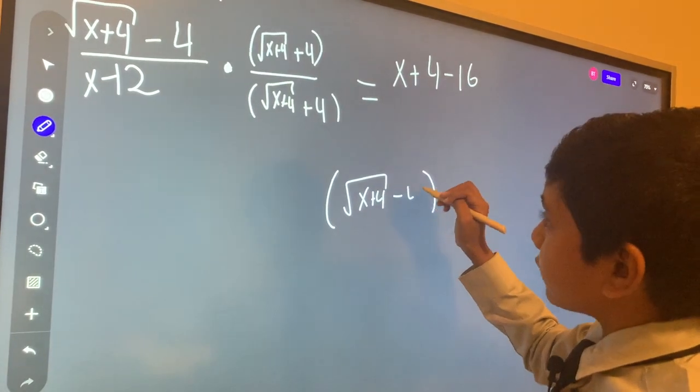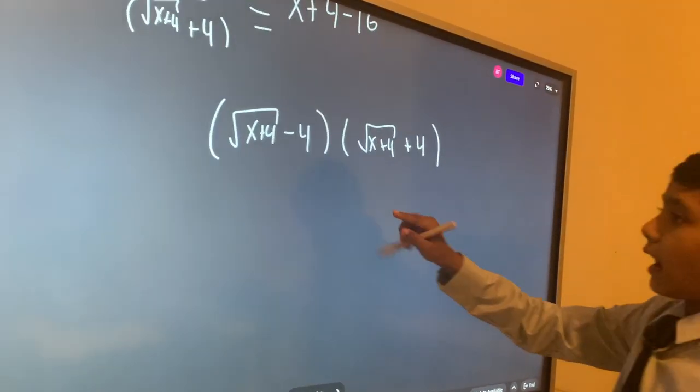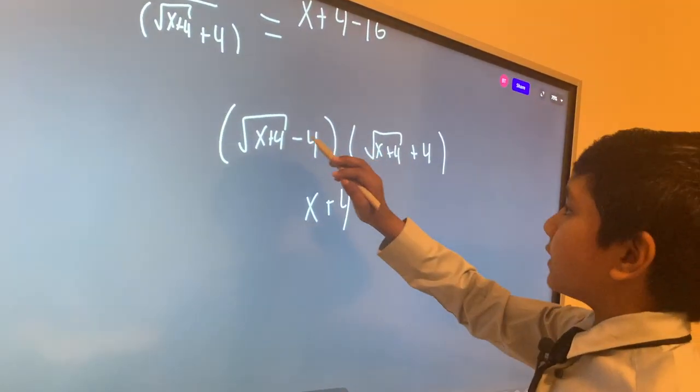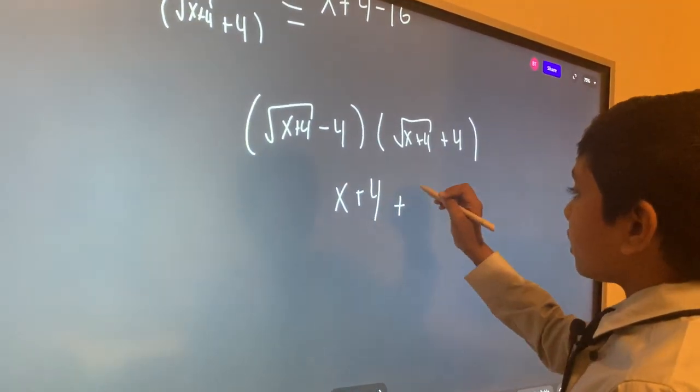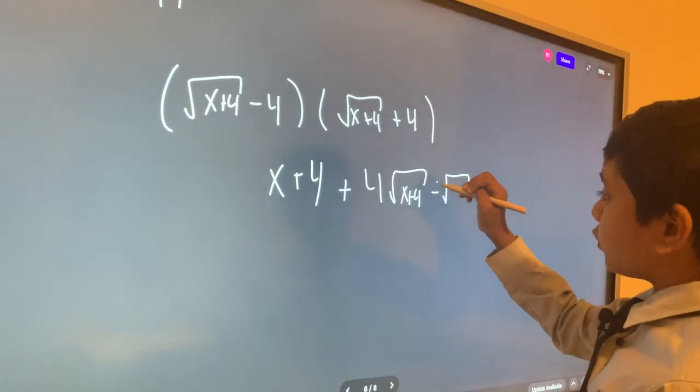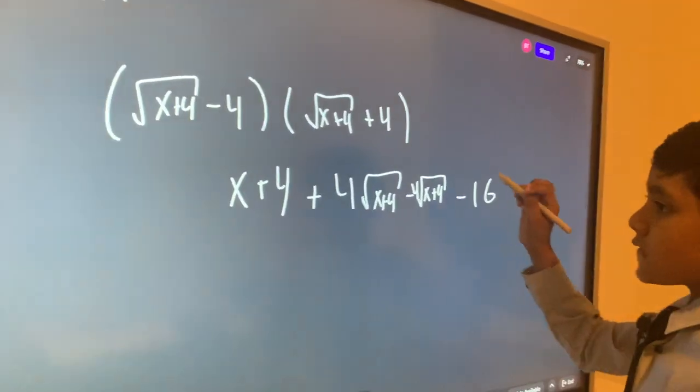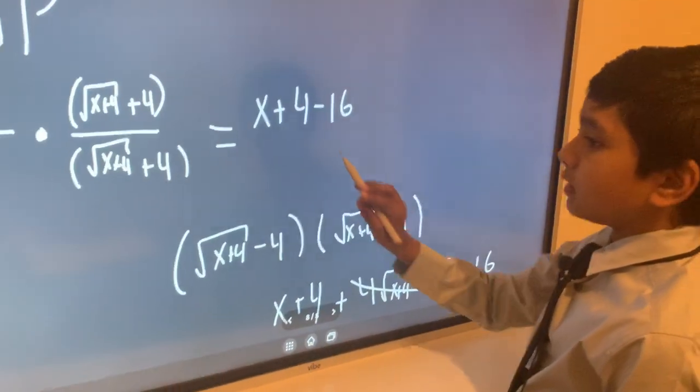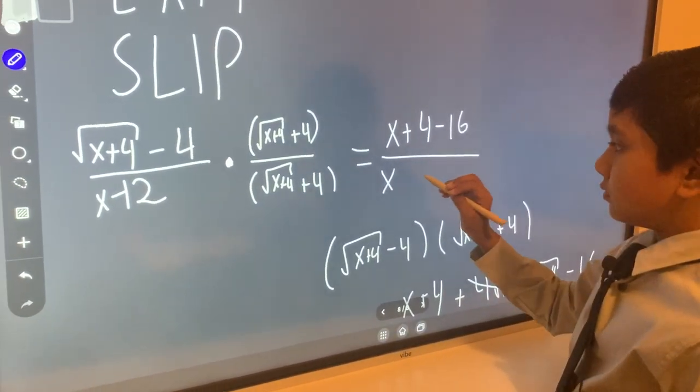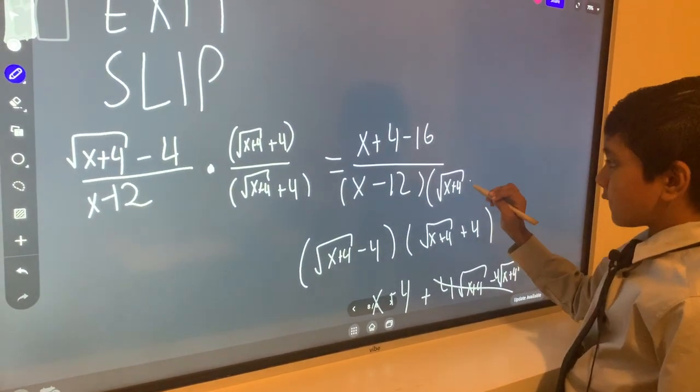Square root of x plus 4 minus 4 times square root of x plus 4 plus 4. And now, you'll get x plus 4 times square root of x plus 4. Make something good. And then you'll get plus 4 root of x plus 4 minus 4 times 4 root x plus 4, and then minus 16. So you just get x plus 4 minus 16 over x minus 12 times root x plus 4 plus 4.